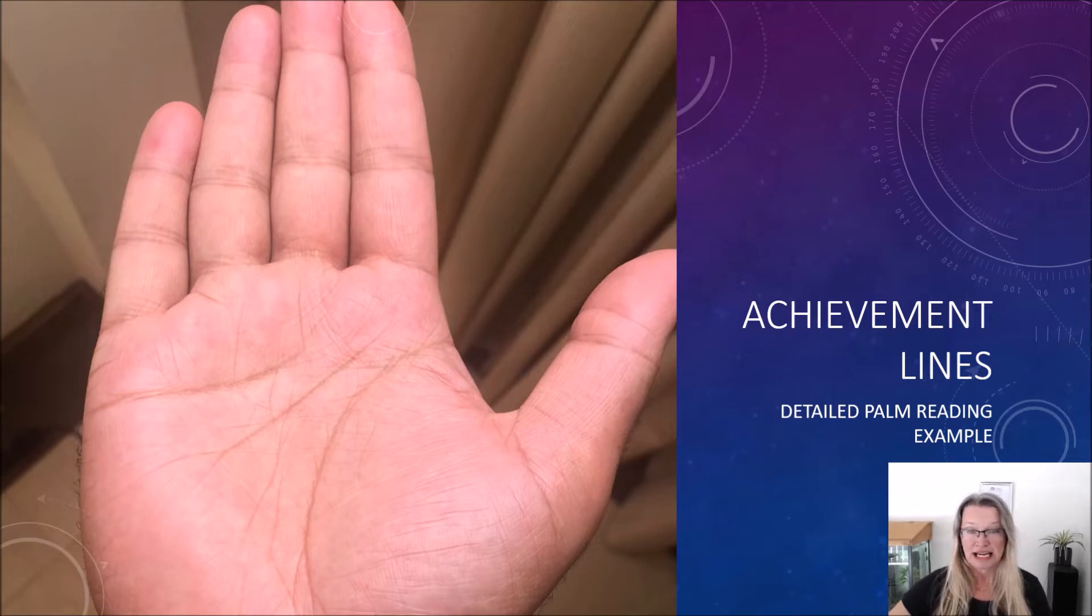We are mainly going to be talking about the achievement lines. These can be related to various things in life like career, study, achieving a degree or diploma. It can be any achievement of a goal, a birth of a child, a marriage, a good outcome in a court case. Whatever is an achievement for the individual can show up as an achievement line.